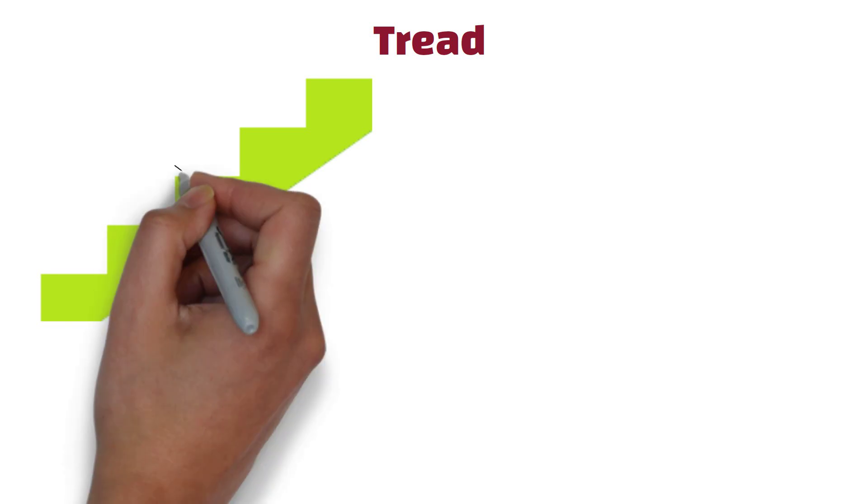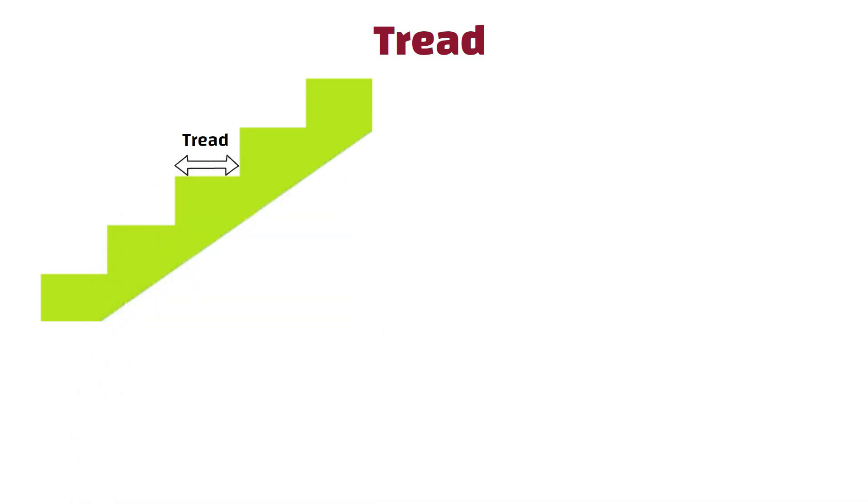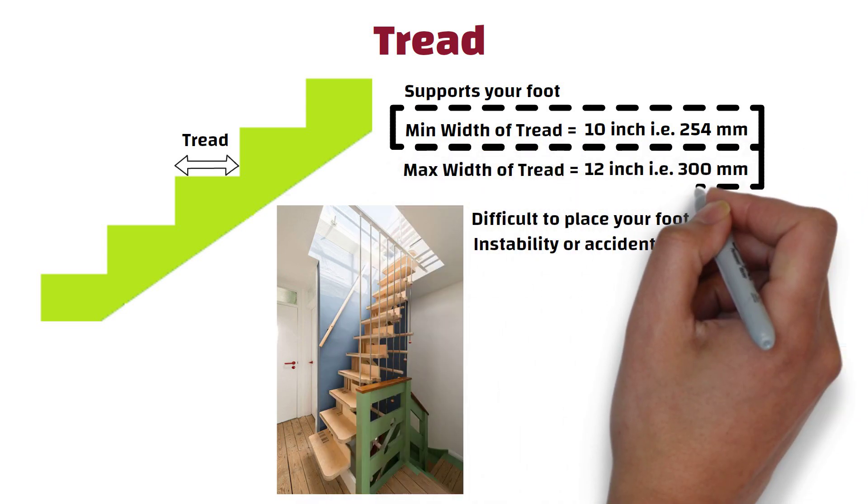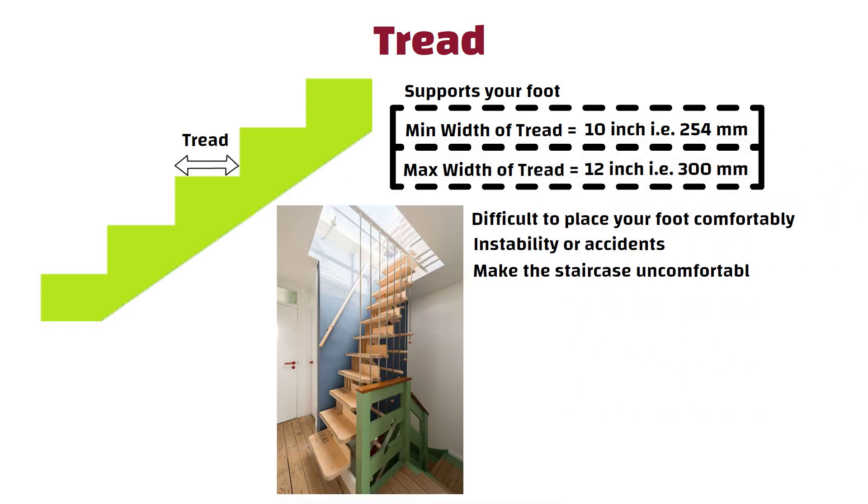2. Tread. Tread refers to the horizontal surface that you step on when ascending or descending the stairs. It is the part of stair that supports your foot. The minimum width of tread in a residential building should be 10 inches, i.e. 254 mm, while the maximum width should be 12 inch, i.e. 300 mm. If the tread is too narrow, it may be difficult to place your foot comfortably, which can lead to instability or accidents. On the other hand, if the tread is too wide, it can make the staircase uncomfortable to use.